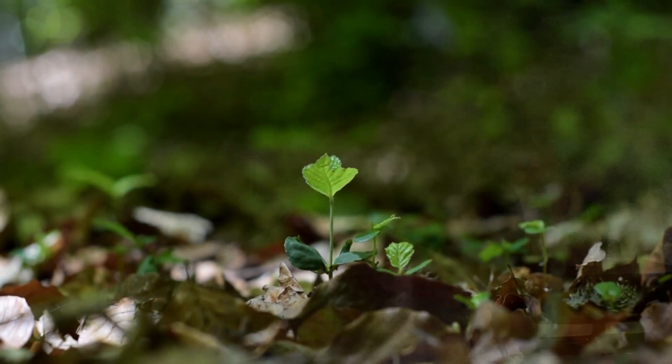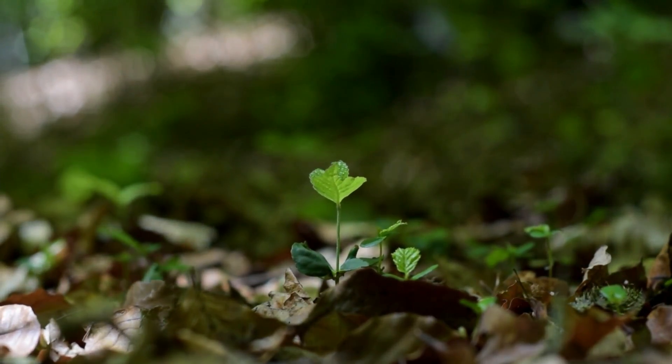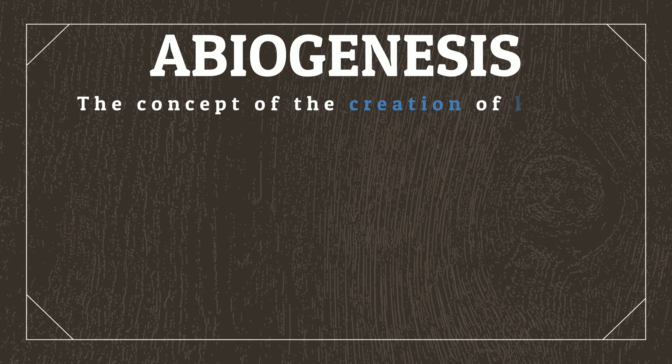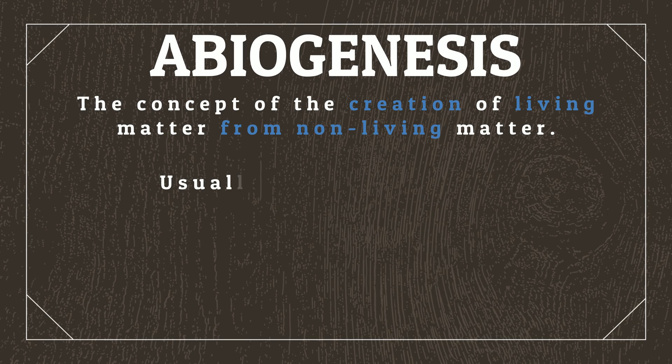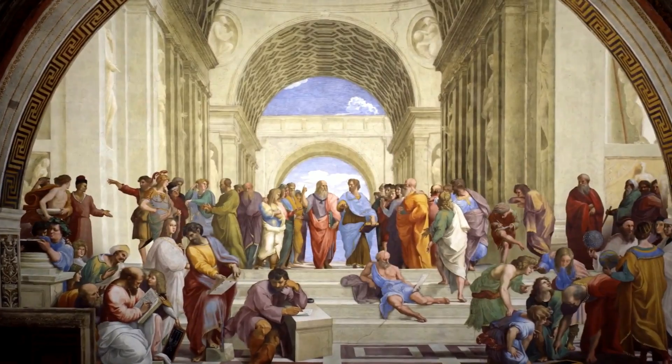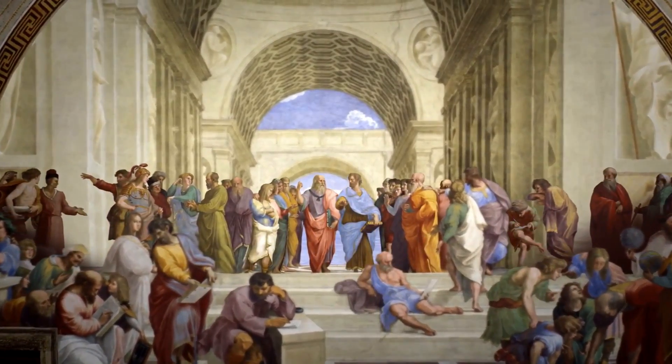The transition from a non-living planet to one that has life is slow, and Luca is probably not the first life form, but rather the earliest that is successful. But where did Luca come from? The answer, or at least the way we get to the answer, is abiogenesis — the concept of the creation of living matter from non-living matter, usually pertaining to the origins of life. And in real life, we've had many hypotheses across the centuries for how abiogenesis may have occurred.